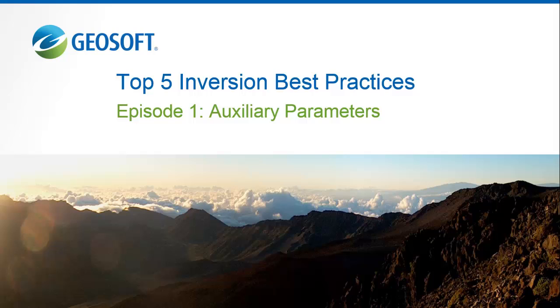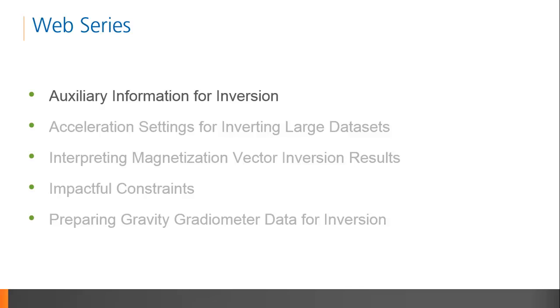This episode is one of a five-part series on inversion best practices. In this video, you'll learn about the importance of auxiliary information in inversion, and how to choose parameters for an efficient and accurate inversion model. If you missed the introductory video for this web series, check it out online or continue on.